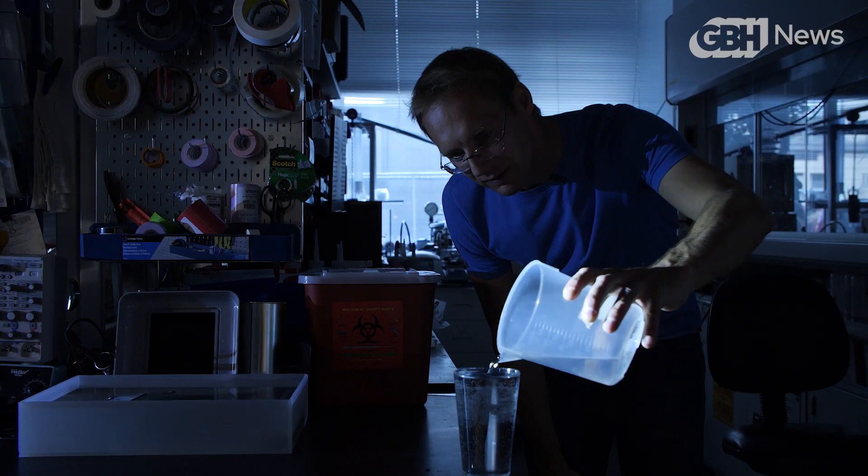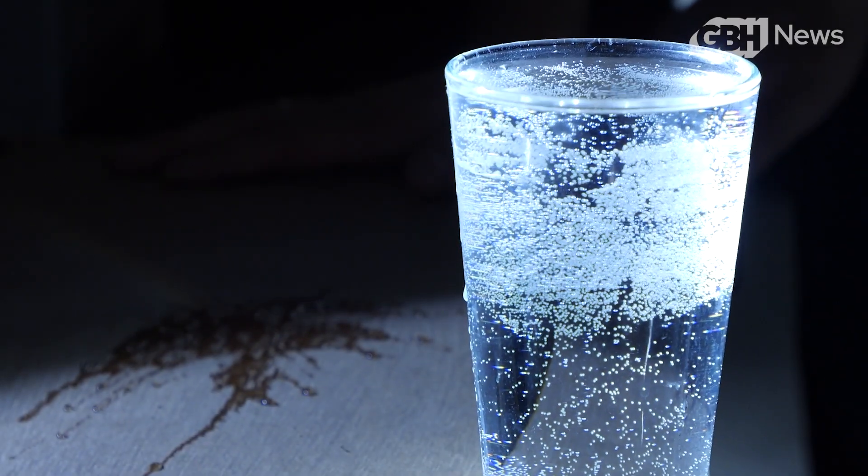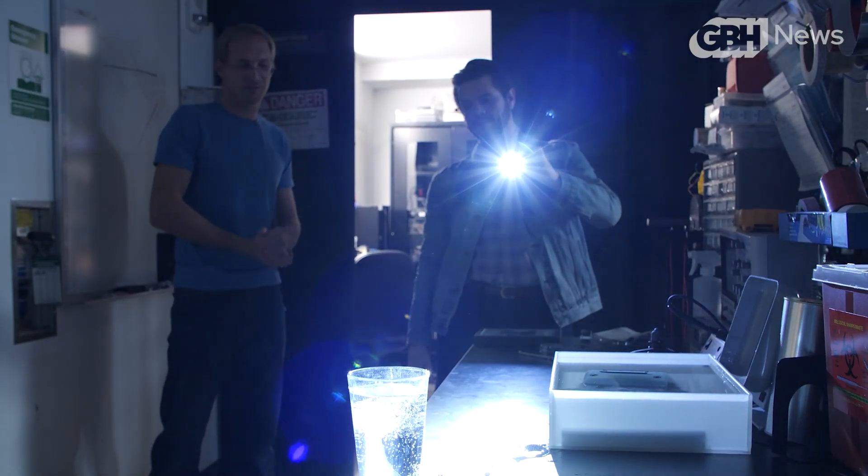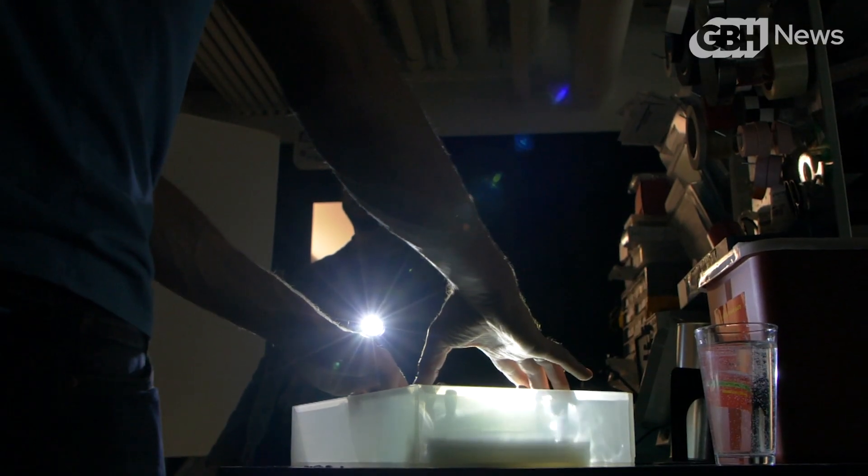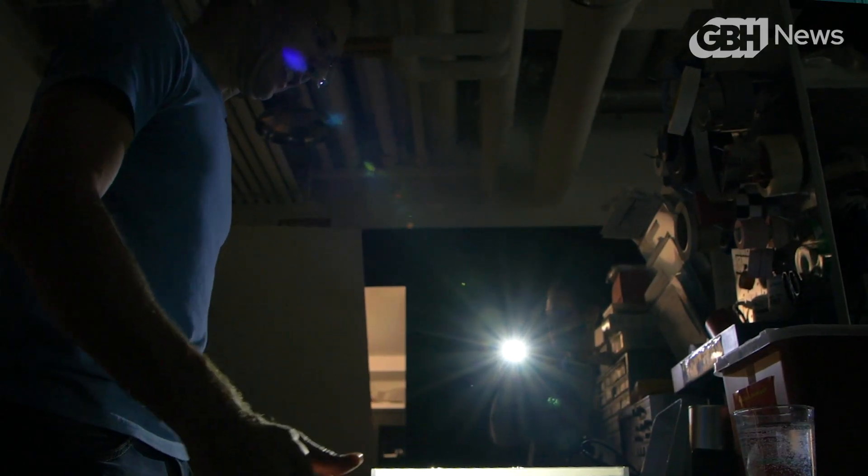Rainbows are of course one of nature's most charming tricks of light, and light is exactly what scientist Matthias Kohl spends his days pondering. In order for a rainbow to appear in the sky, you need three ingredients, so to speak: sunlight, raindrops, and you. And as Kohl explains, all three have to be in a very particular spot for the magic to happen.